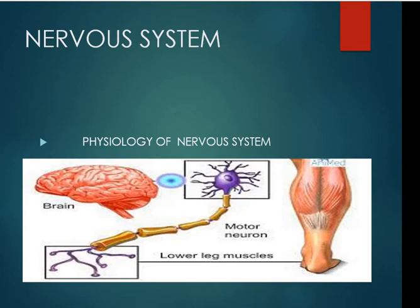In the last lecture we studied the anatomy of the nervous system. In today's lecture we will cover physiology — what our nervous system basically does. We know that there are many activities we have to control in our body, both internally and externally. Our nervous system controls both voluntary and involuntary functions.